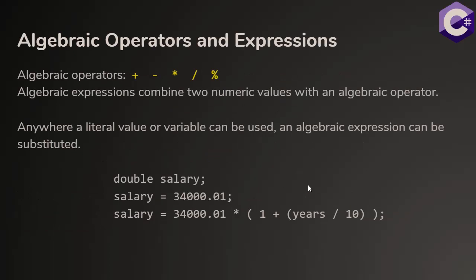Let's review algebraic operators and expressions. There are five basic algebraic operators in C#. There's a plus for addition, minus for subtraction, an asterisk for multiplication, a forward slash for division, and a percent sign for modulus.